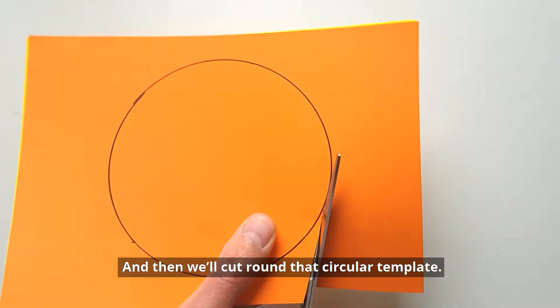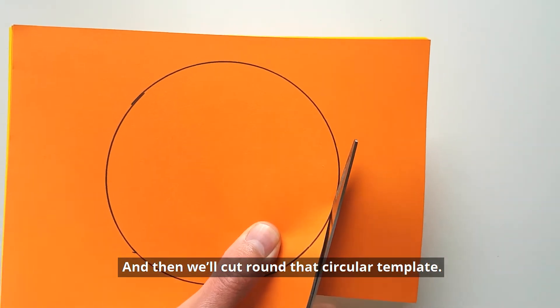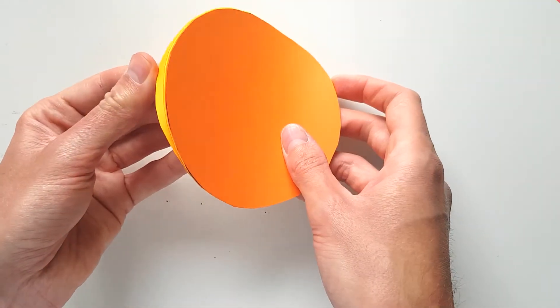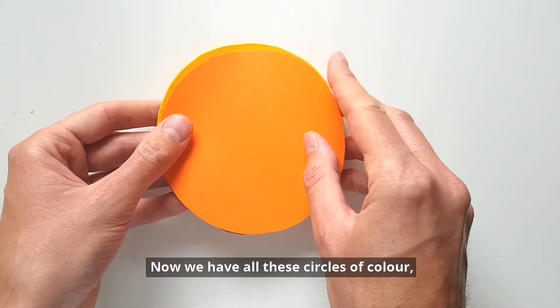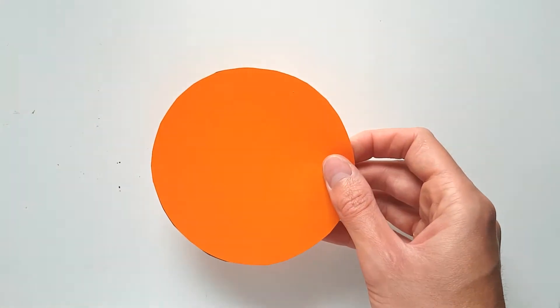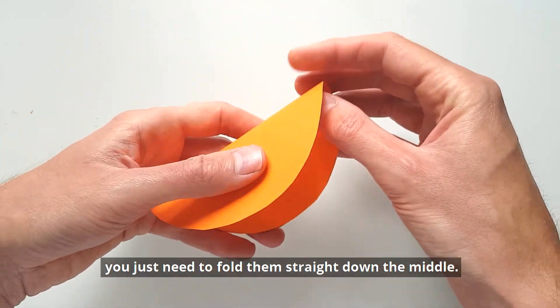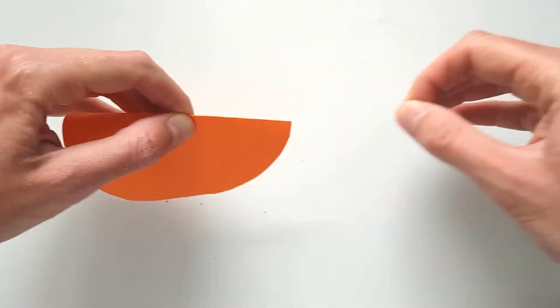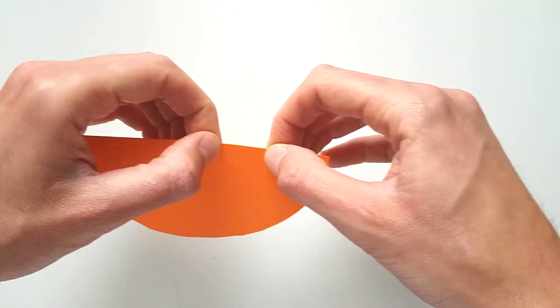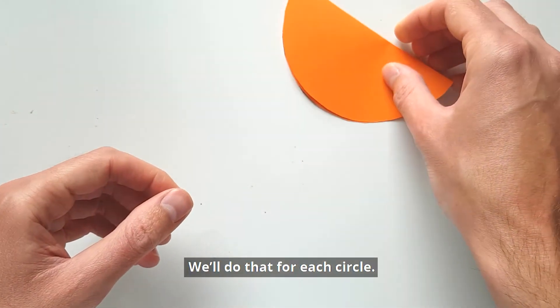And then we'll cut around that circular template. Now we have all these circles of color. We just need to fold them straight down the middle, and we'll do that for each circle.